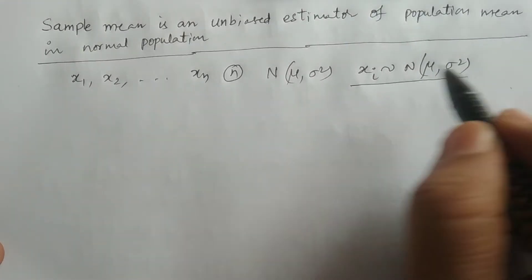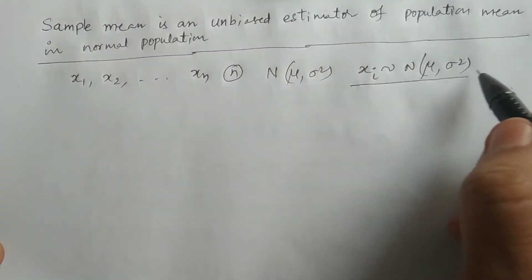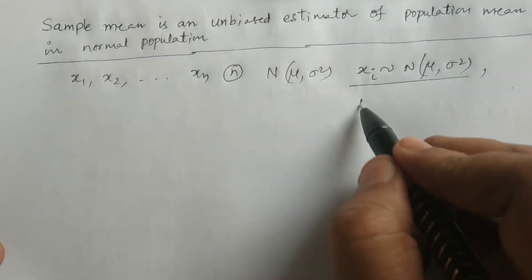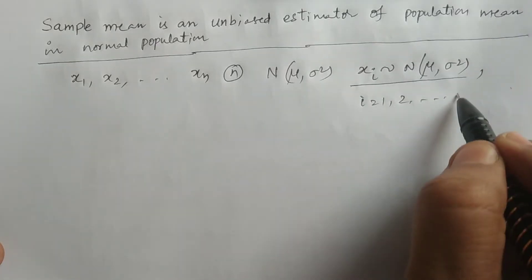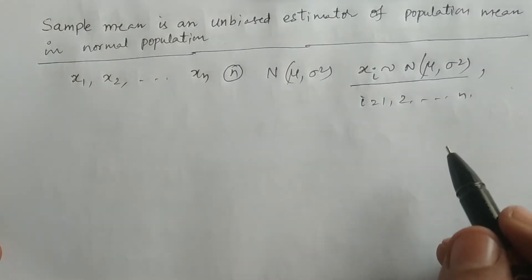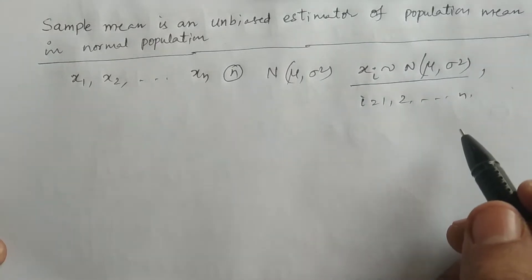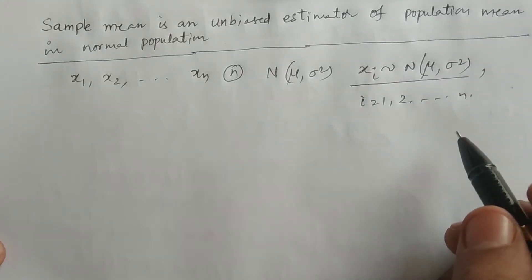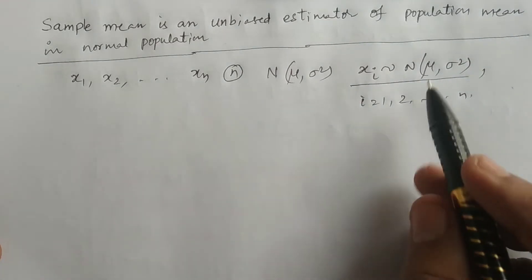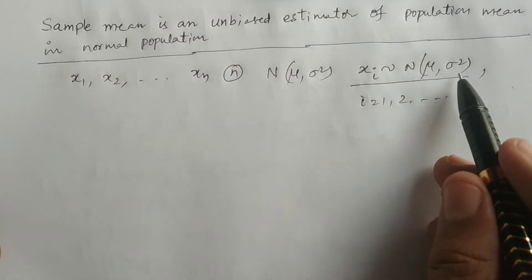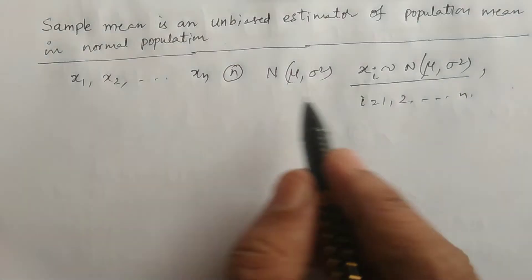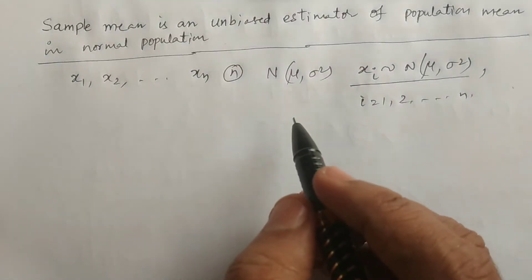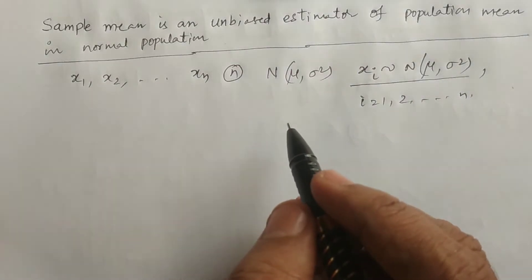For all xi, i is equal to 1, 2, and so on, n. All xi follow a normal distribution with mean mu and variance sigma square. That is our fundamental consideration.